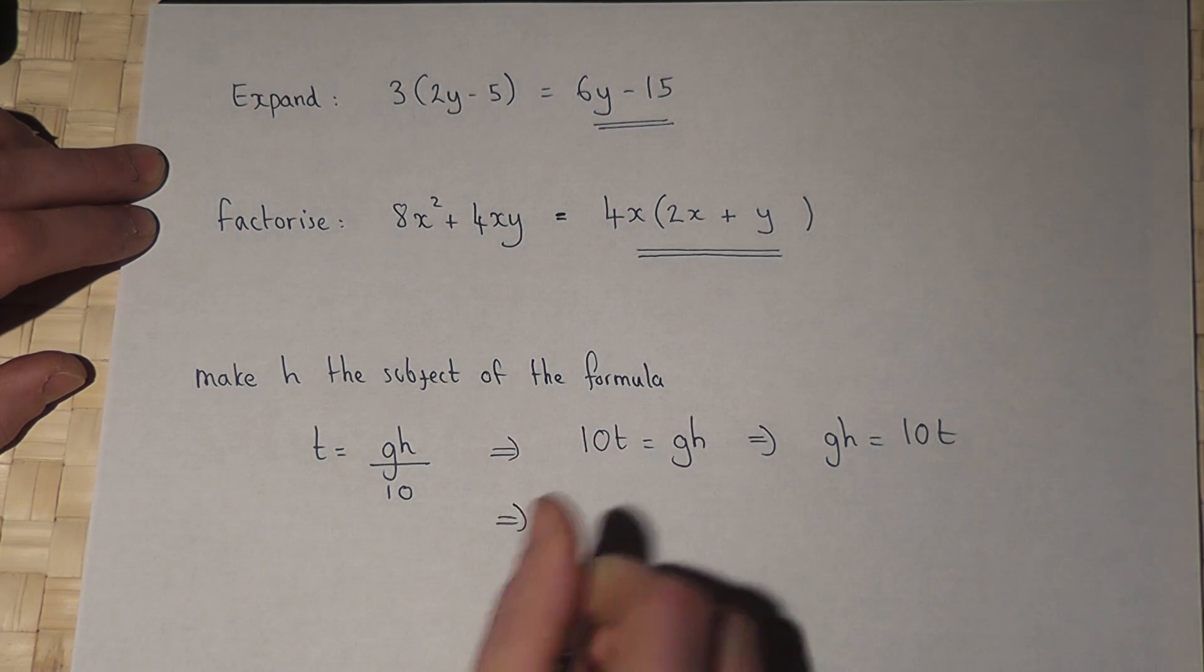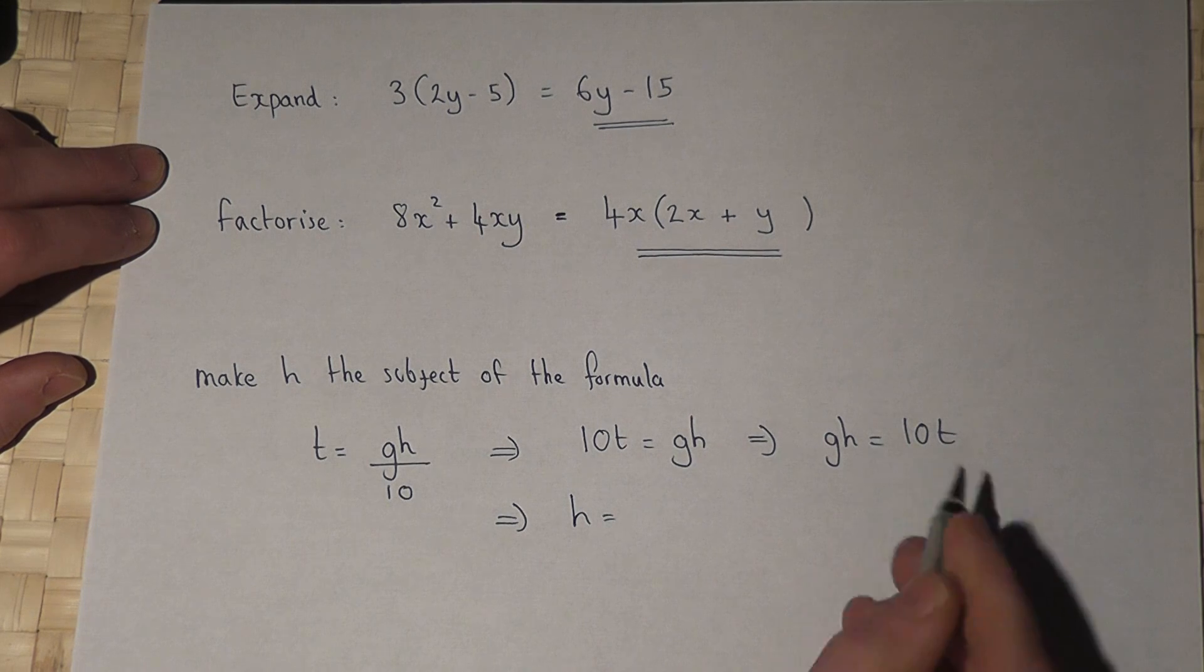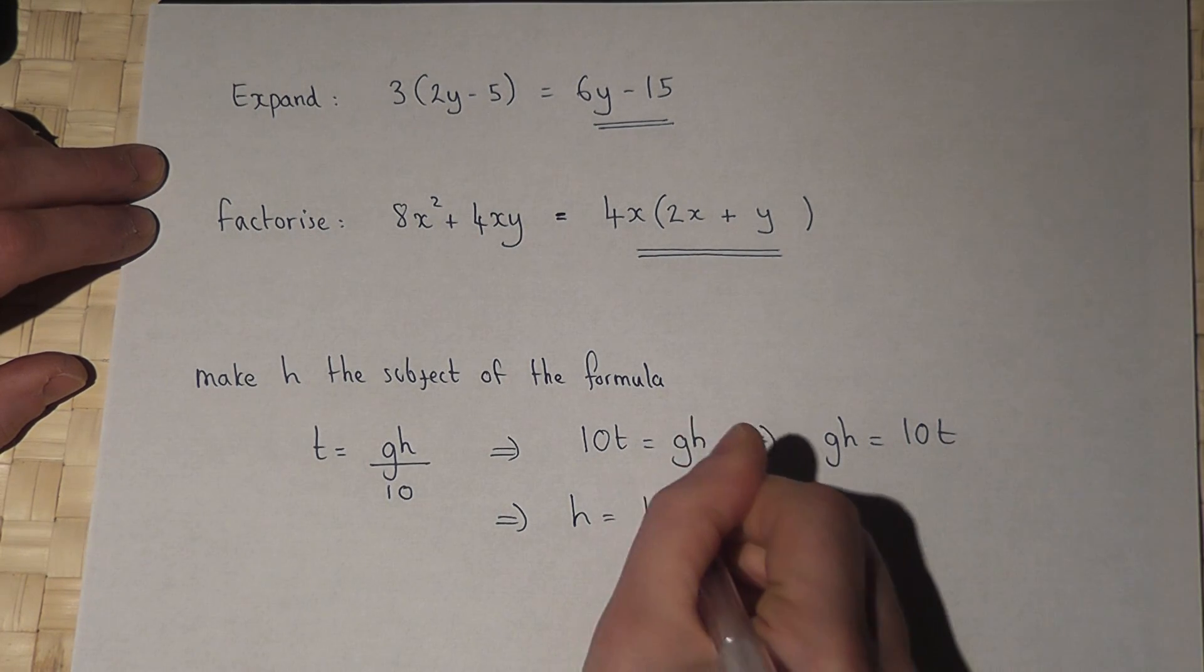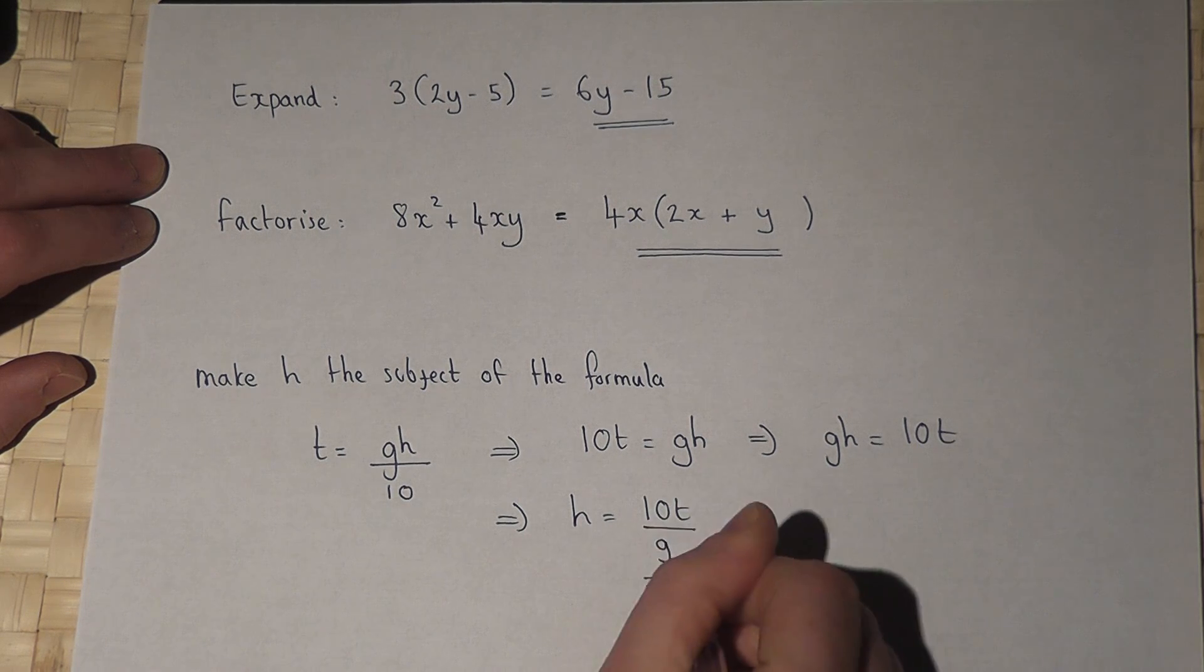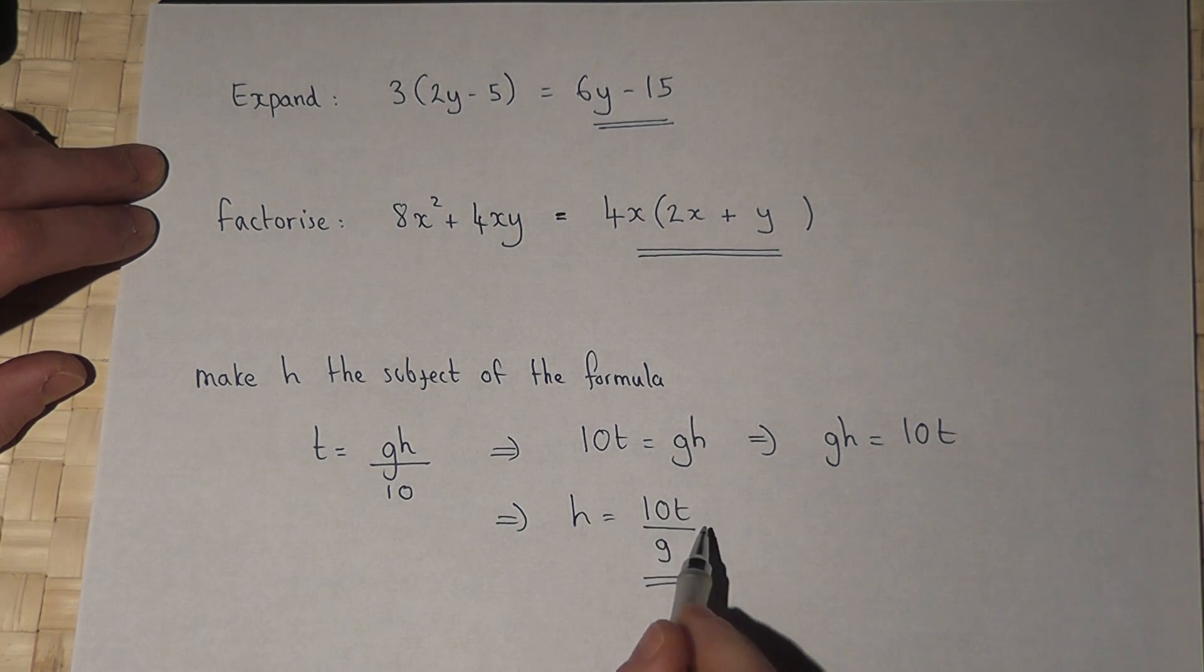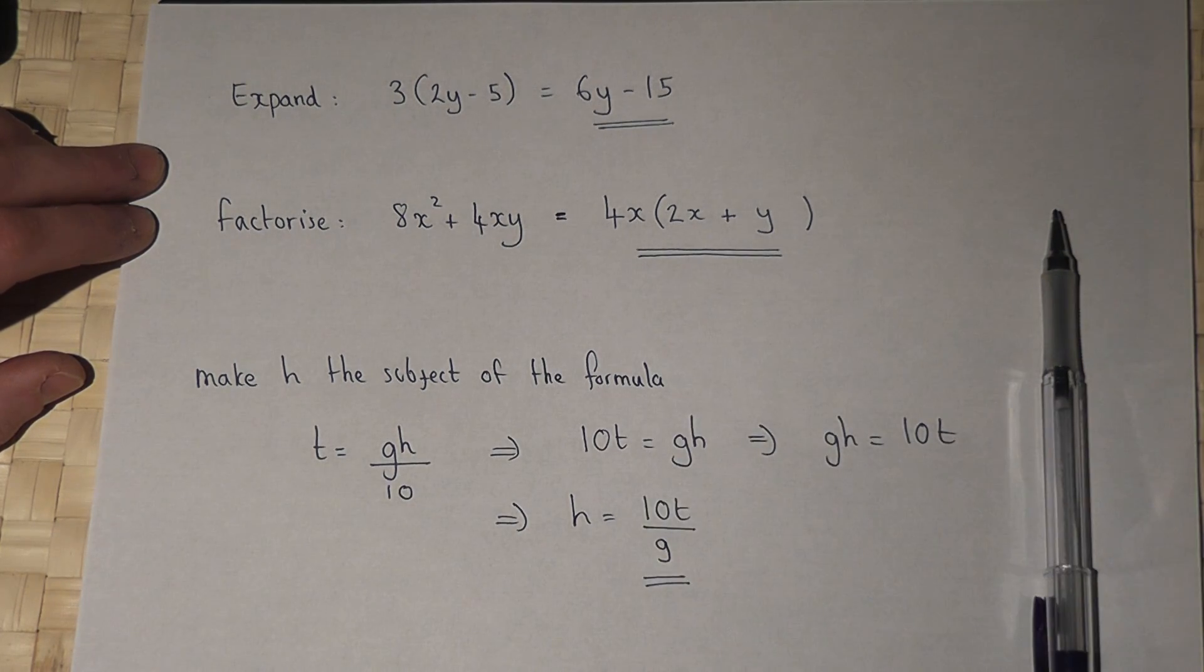So to get h equals, I'll have to divide by g. So h equals 10t all divided by g. I've therefore got h equals, so I've made h the subject of the formula. Thank you.